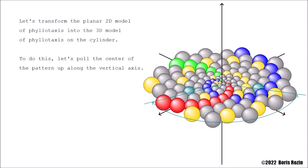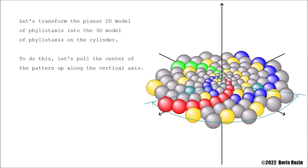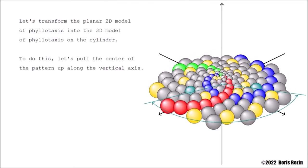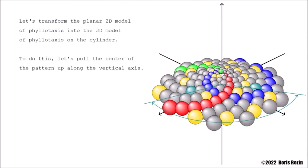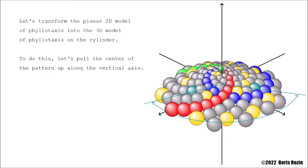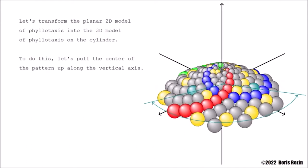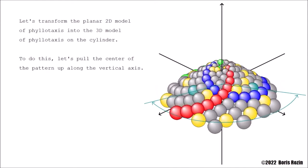Let's transform the planar 2D model of phyllotaxis into the 3D model of phyllotaxis on the cylinder. To do this, let's pull the center of the pattern up along the vertical axis.